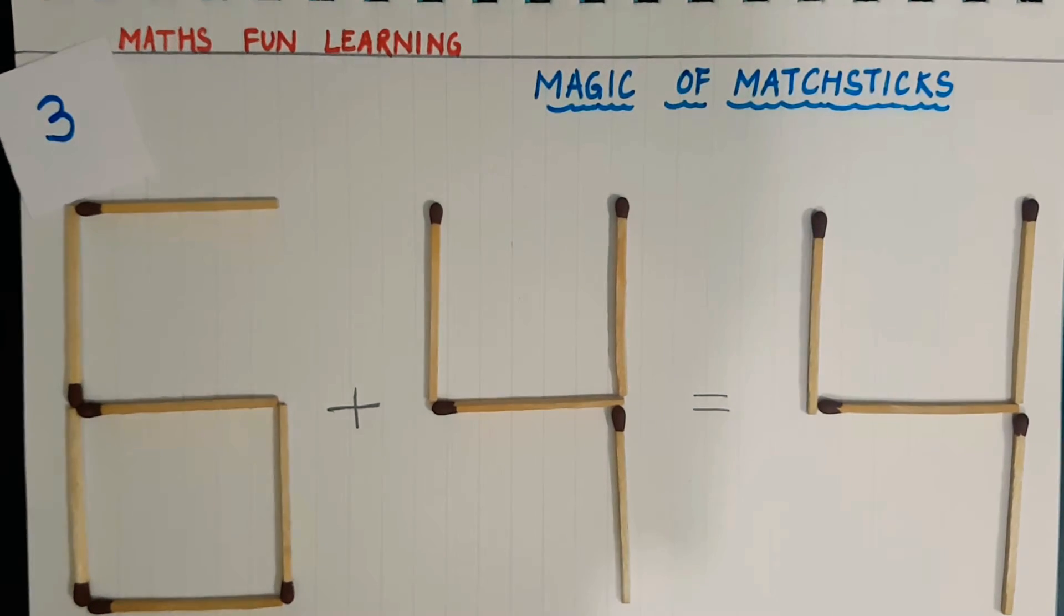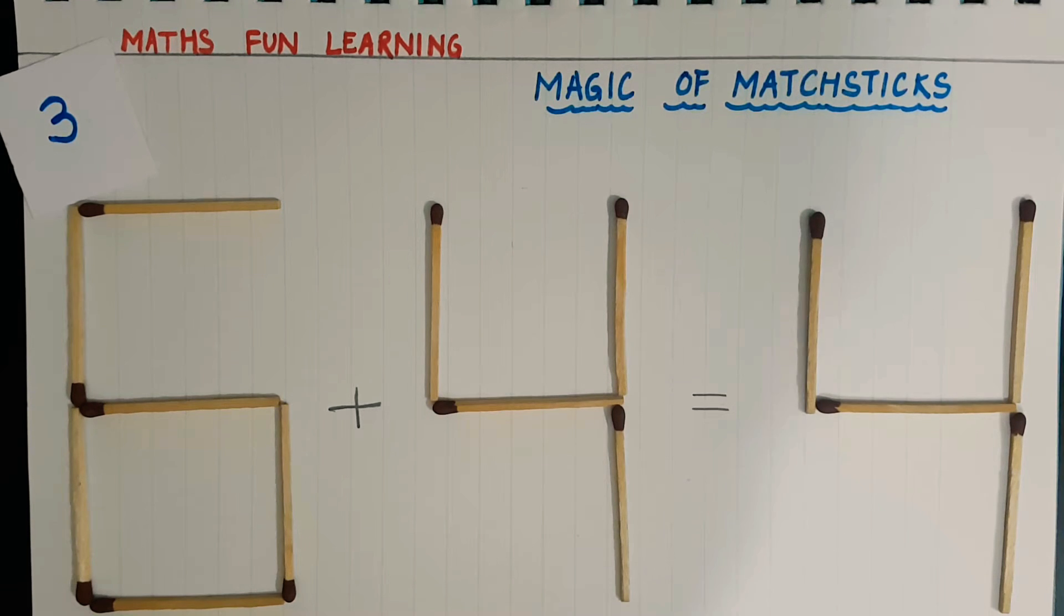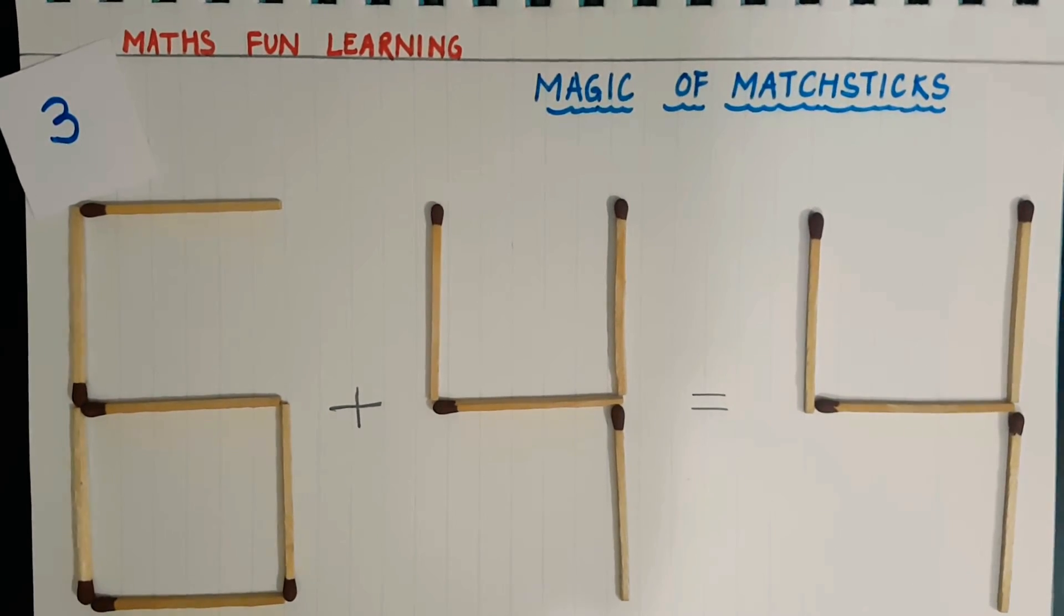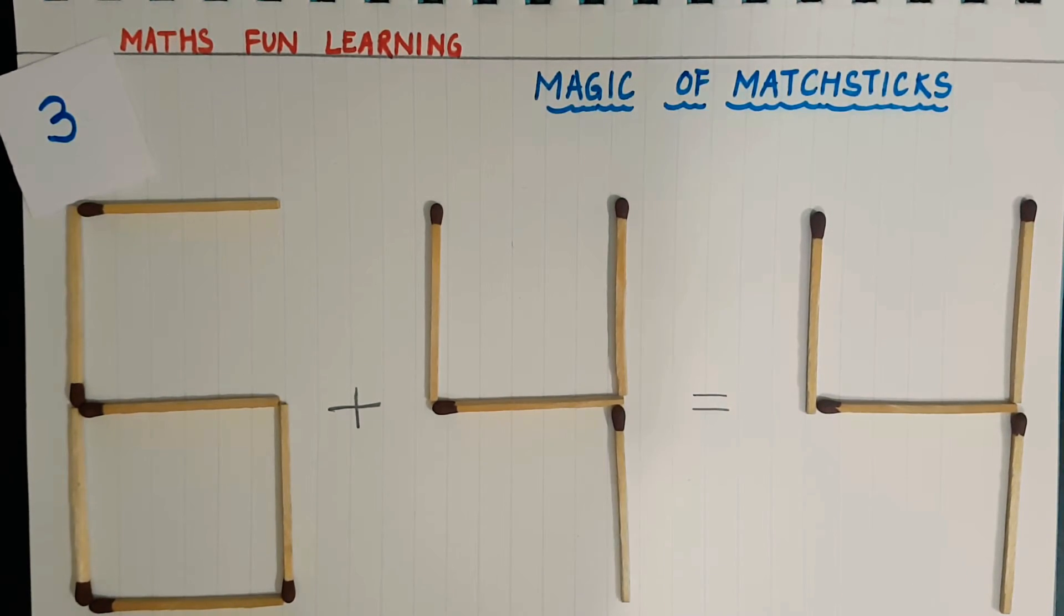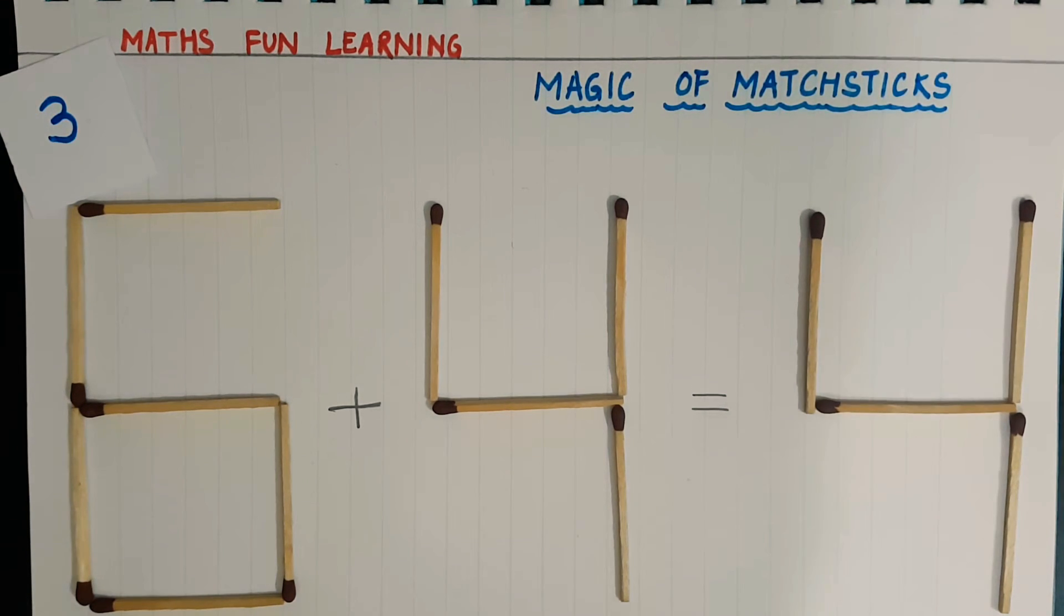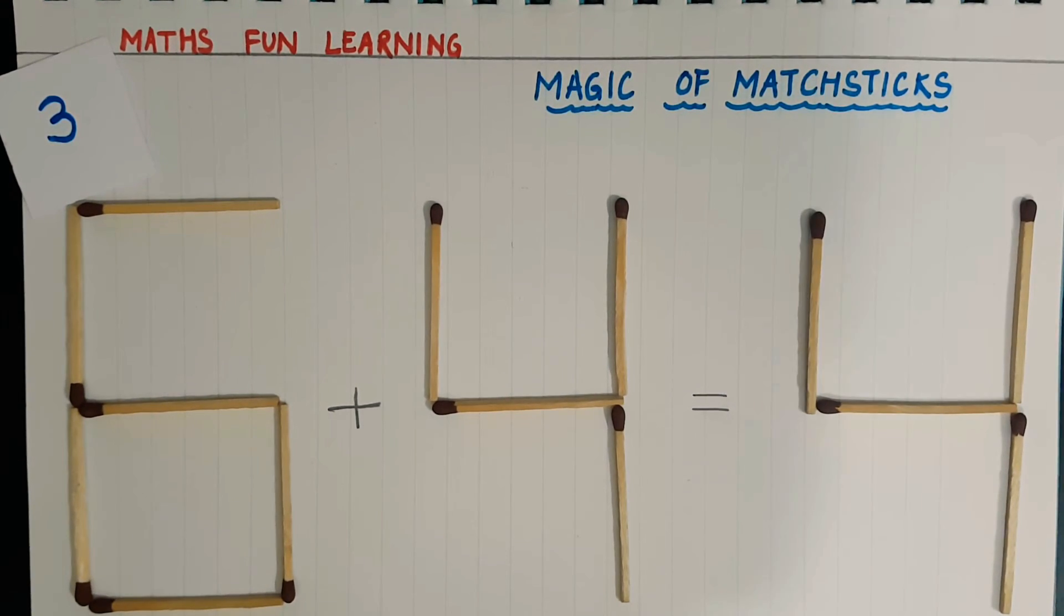So here please note that we have to move one matchstick, okay? We don't have to remove it. We have to move, means we have to move from one place to other place so that our statement is correct. This is a wrong statement. I have to make it a correct statement.